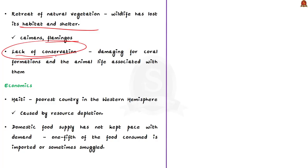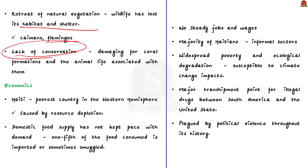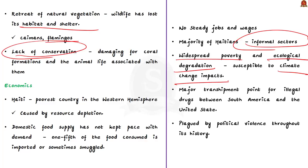Most people in Haiti do not have a steady wage. They work in informal sectors like street vending, odd jobs, and working abroad, and many are engaged in illegal activities. Haiti is experiencing widespread poverty and ecological degradation, making it highly susceptible to climate change impacts. It is also a major transshipment point for illegal drugs between South America and the United States, owing to its strategic position between North and South America.